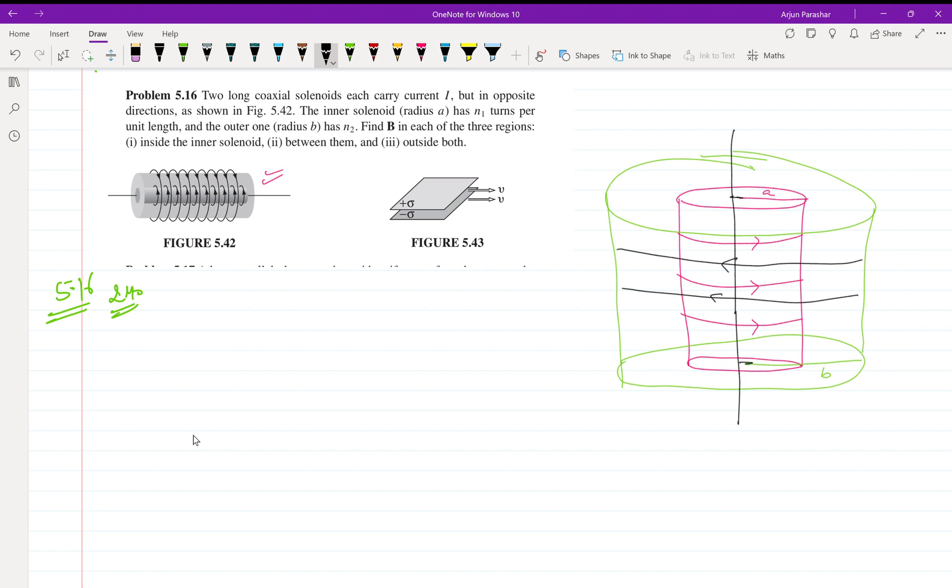As we know, the magnetic field of a solenoid is given by μ₀nI, where n is the number of turns, I is the current, and μ₀ is the permeability in free space.